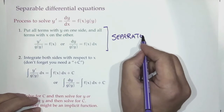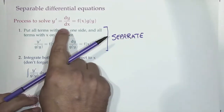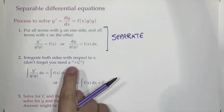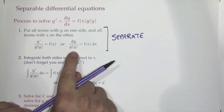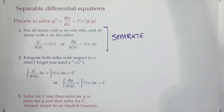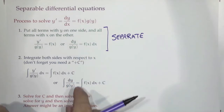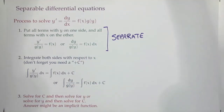In other words, we're going to put everything with y on one side, everything with x on the other. So you'll have your dy over g(y) — that's only y's — and your f(x) dx — only x's.